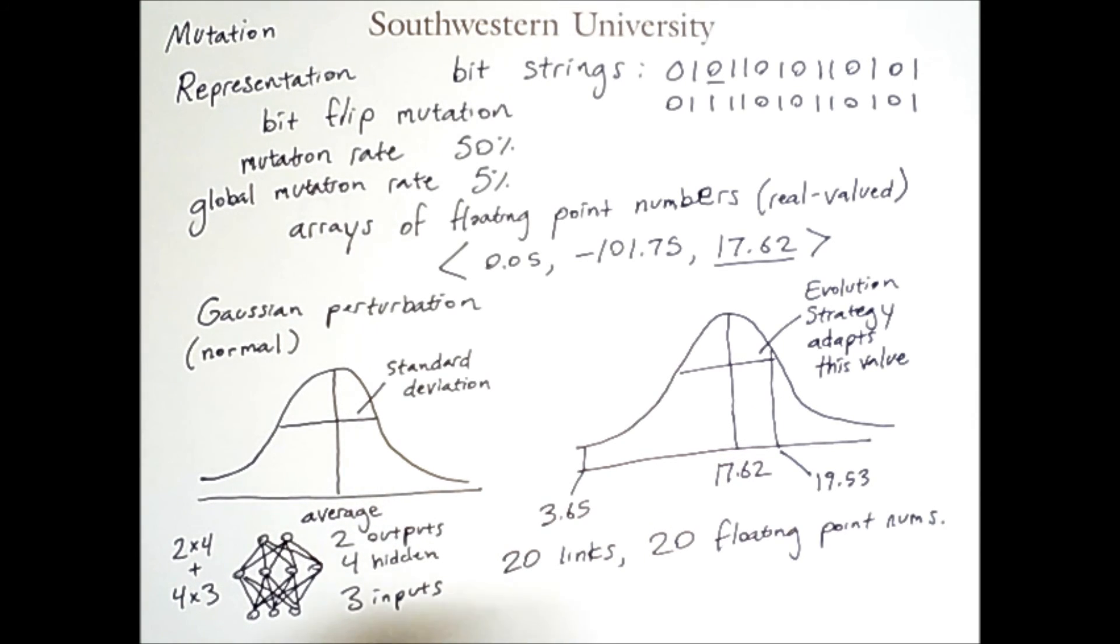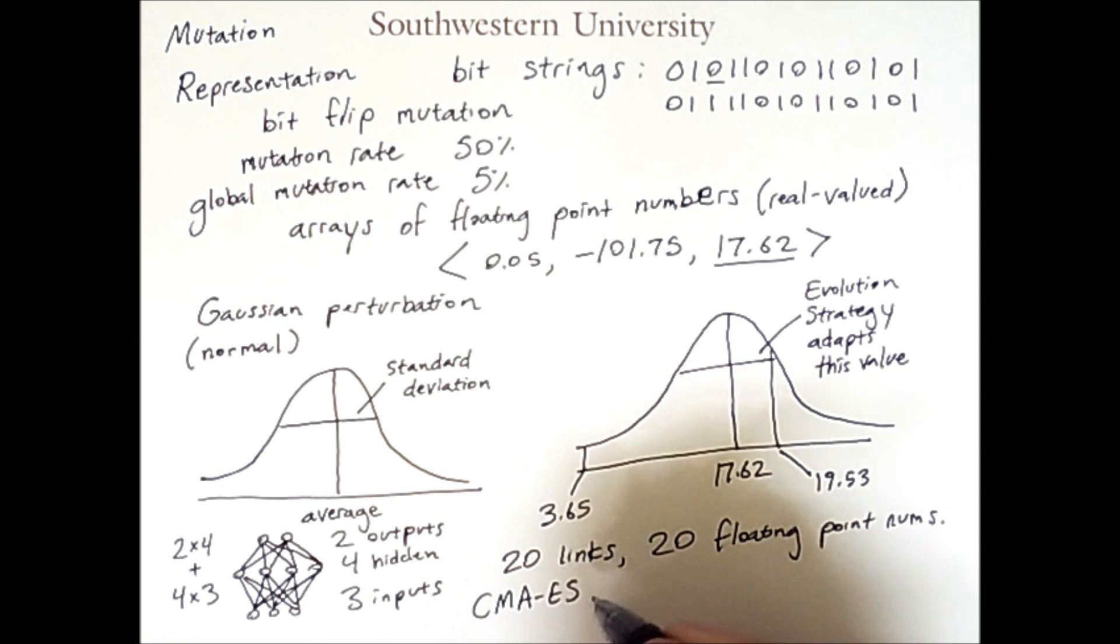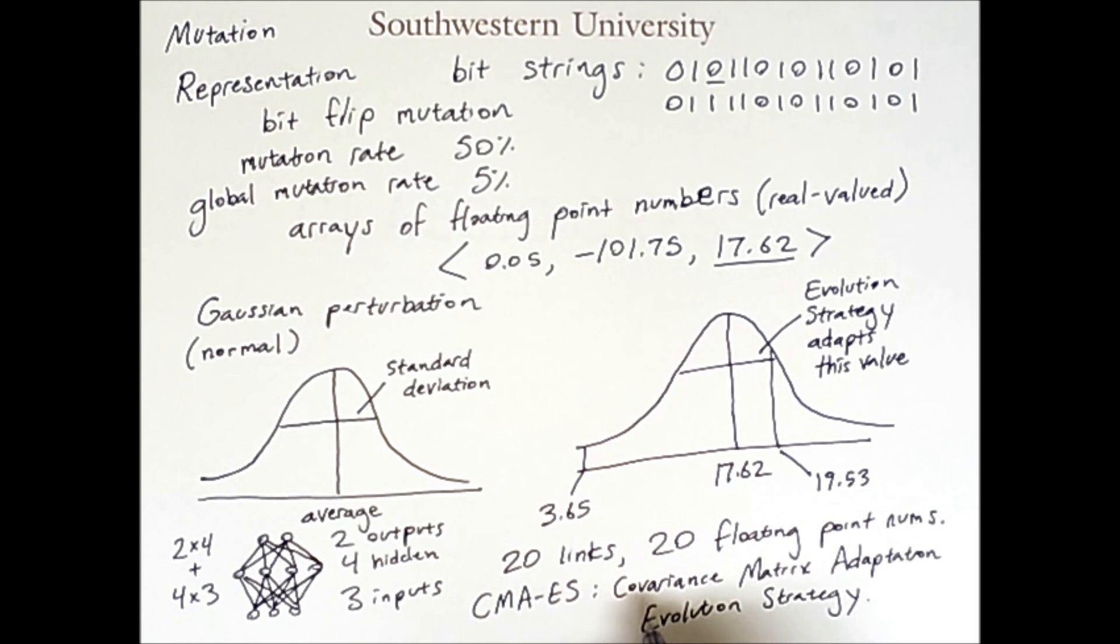Therefore, one way to evolve a network like this is to simply evolve an array of 20 floating point numbers and map each of those numbers to a particular link in this network. This can actually be successfully accomplished using a strategy known as CMAES.